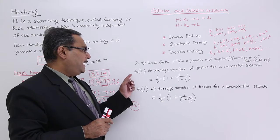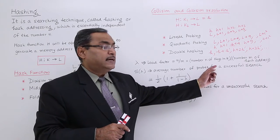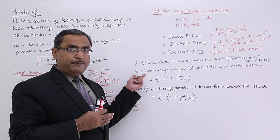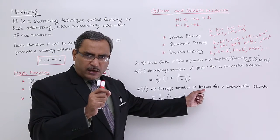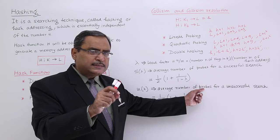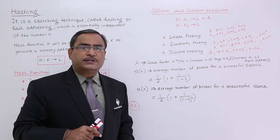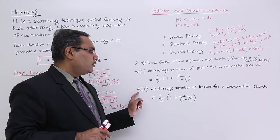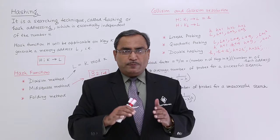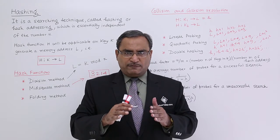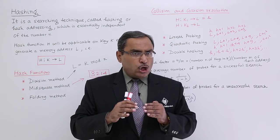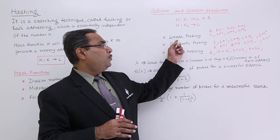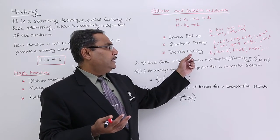There are two performance measures. S(λ) is the average number of probes for a successful search, and U(λ) is the average number of probes for an unsuccessful search. Formulas have been derived for both. So we have discussed what collision is, what factors affect the probability of its occurrence, and how to resolve it using collision resolution techniques: linear probing, quadratic probing, and double hashing.